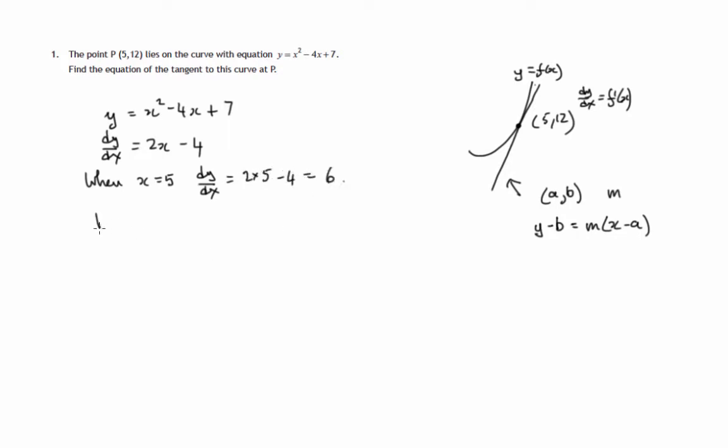So point on tangent is (5,12), gradient of tangent is equal to 6. So the equation of tangent is y minus 12, that's the y coordinate b, is equal to the gradient m times x minus the x coordinate a, which is 5 in this case.